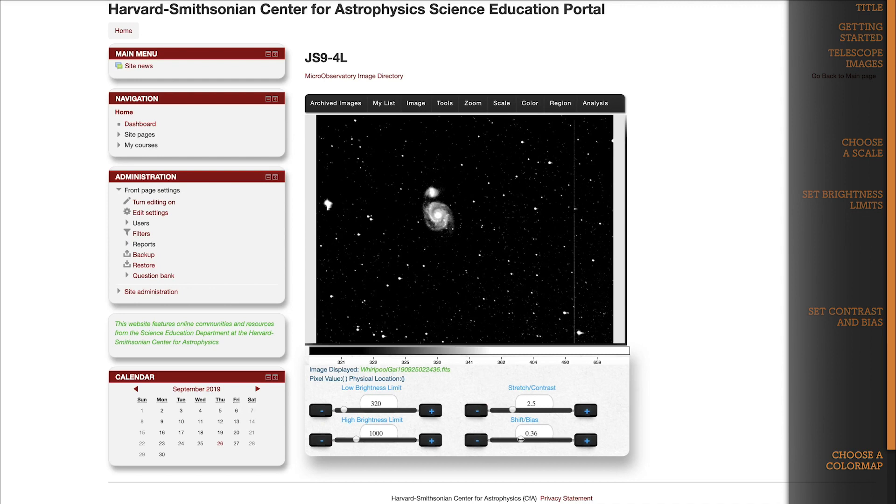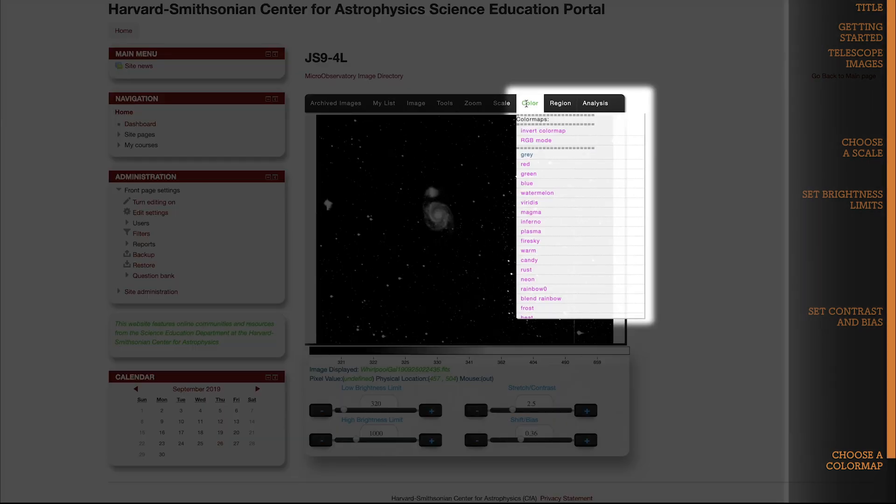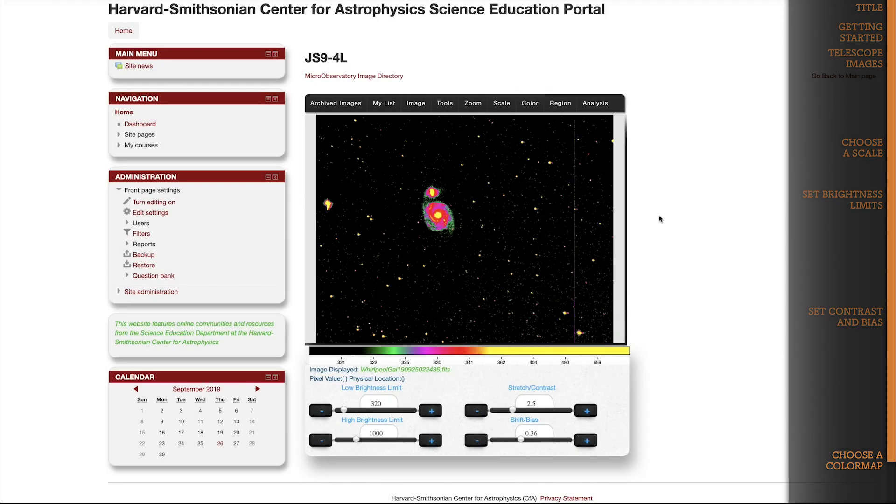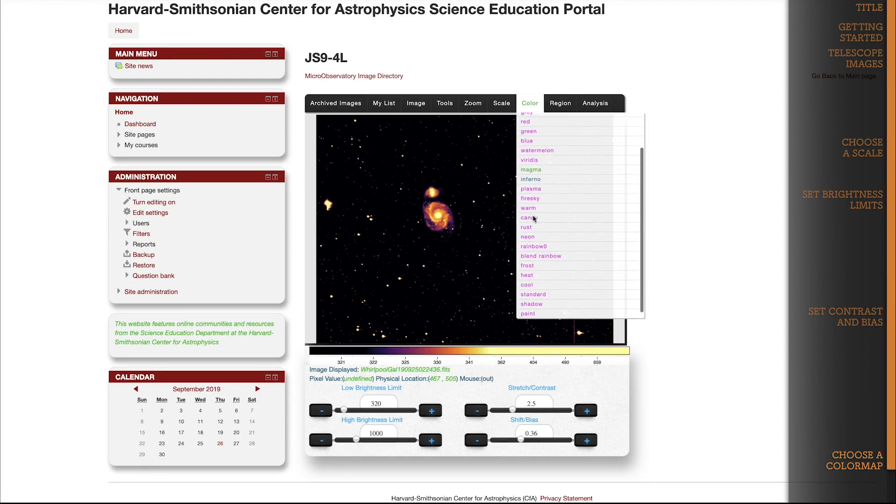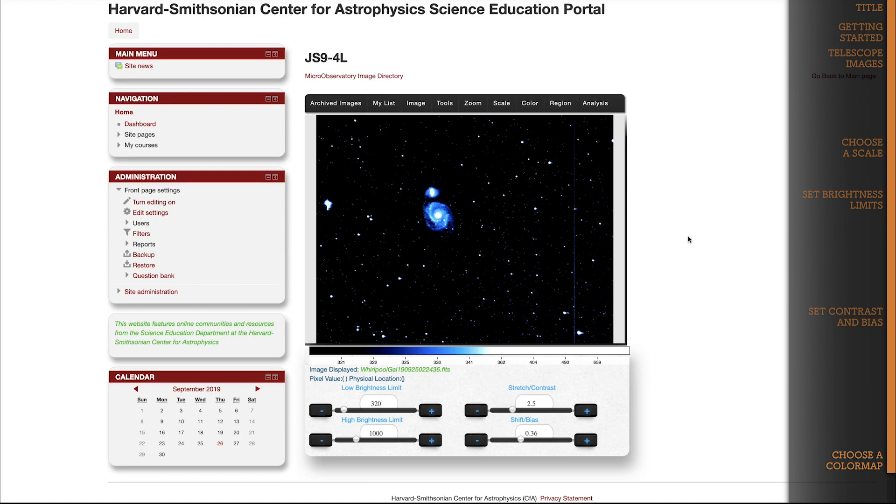One more thing before we go. You don't have to use a black and white color scale. JS9 comes up with a bunch of different color maps that you can apply to your data. Go up to the color dropdown, and you can choose from color maps like Watermelon, and Inferno, and Cool. Huh, that is pretty cool.